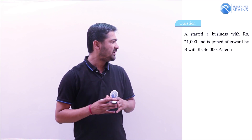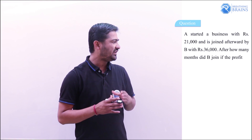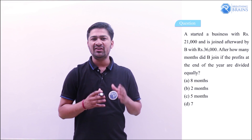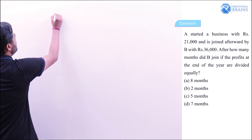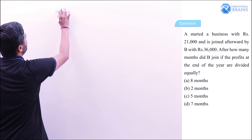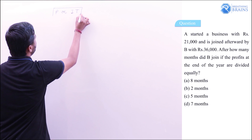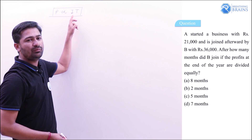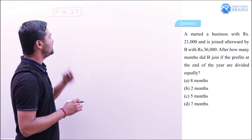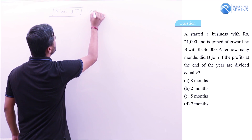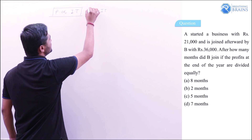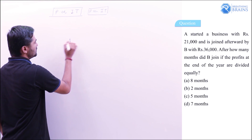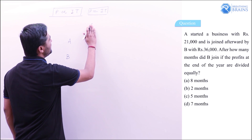The next question: A started a business with ₹21,000 and is joined afterward by B with ₹36,000. After how many months did B join so that profits at the end of the year are divided equally? The key concept is that profit is directly proportional to the product of investment and time.